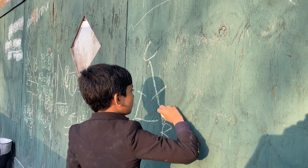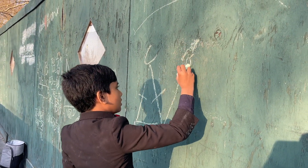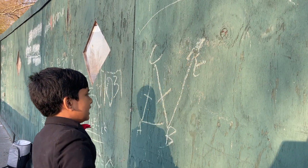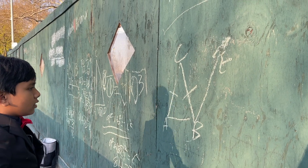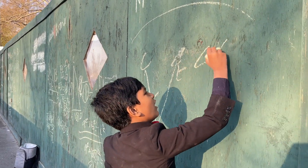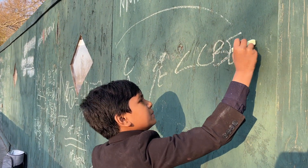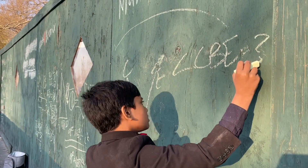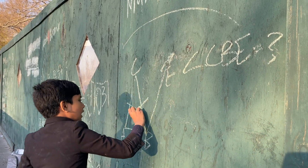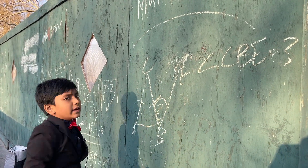We have points A, B, C, and then we have a line E over here. What we're trying to find is angle CBE — in other words, this angle right over here.